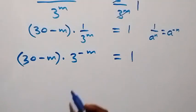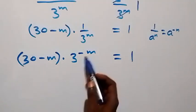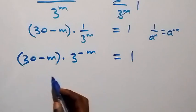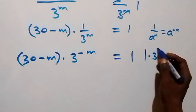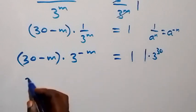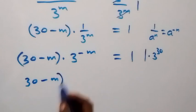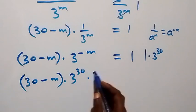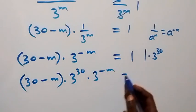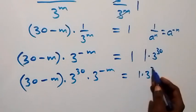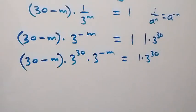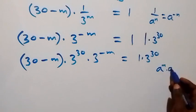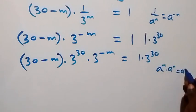We can also make this power m become 30 minus m by multiplying both sides by 3 raised to power 30. Applying the law of indices — a raised to power m times a raised to power n is the same as a raised to power m plus n.